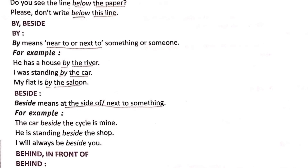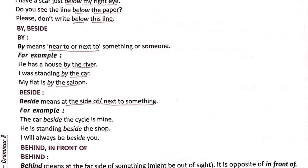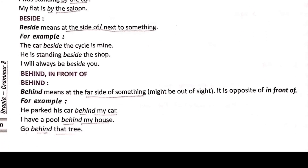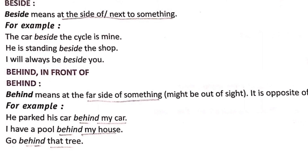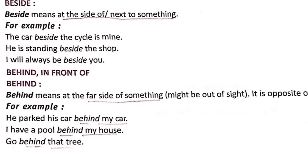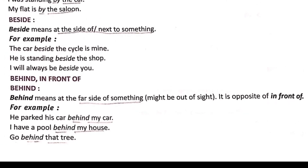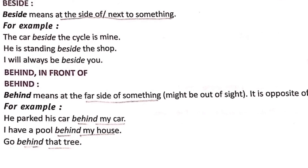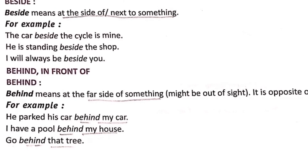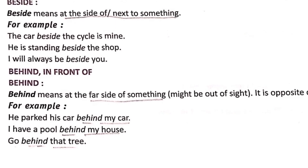Then comes 'behind', which means at the far side of something — it might be out of sight. It is the opposite of 'in front of'. When we talk about something being at the back, we use 'behind'. Examples: 'He parked his car behind my car.' 'I have a pool behind my house.' 'Go behind that tree.'